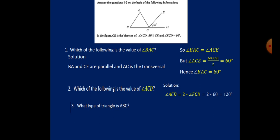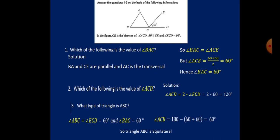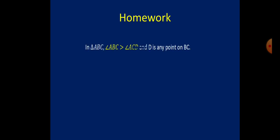What type of triangle is ABC? We know angle B is 60 degrees and angle A is also 60 degrees. So angle ACB equals 180 minus (60 + 60), which is also 60 degrees. Since all three angles are 60 degrees, triangle ABC is equilateral.